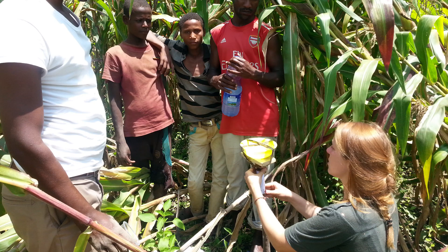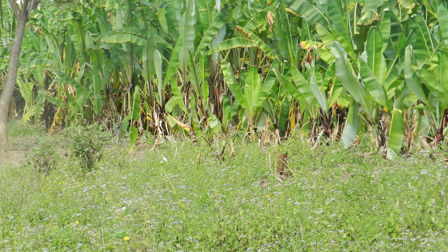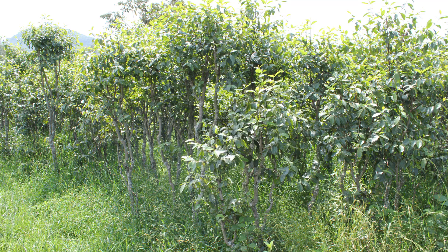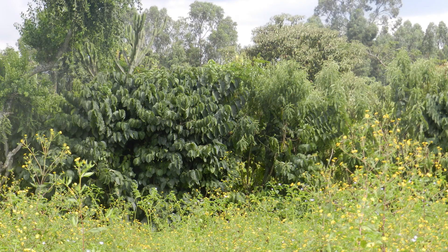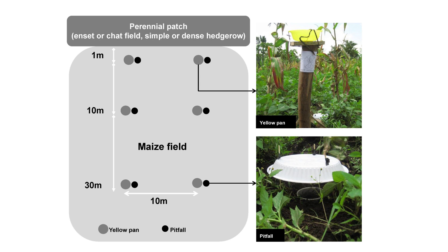To assess the density of natural enemies, we set up pitfall and yellow pan traps in maize fields bordered by endsets, jatropha, or different types of hedgerows — dense and simple — and these at different distances at 1, 10, and 30 meters.